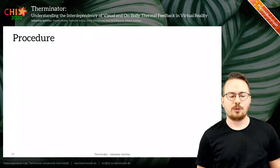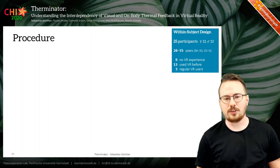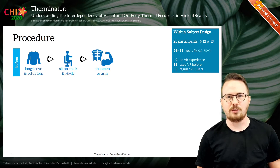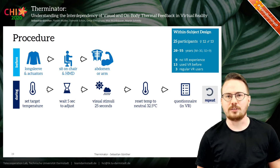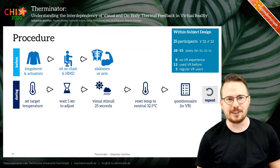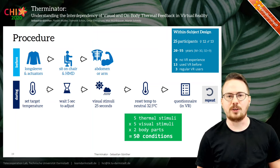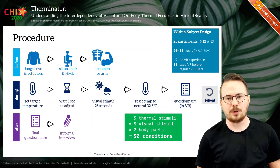For the procedure: we used a within-subject design with 25 participants. All of them were provided with a long sleeve while sitting on a chair and wearing our actuators beforehand. Each participant either started with the arm or abdomen, and during each condition we combined each thermal stimulus with each visual stimulus and exposed each combination to the user for about half a minute. Afterwards, we reset both to their neutral stimuli and asked participants to answer a questionnaire in VR. In total, this was repeated for all 50 combinations. At the end, we asked for additional qualitative feedback through a final questionnaire and informal interviews.